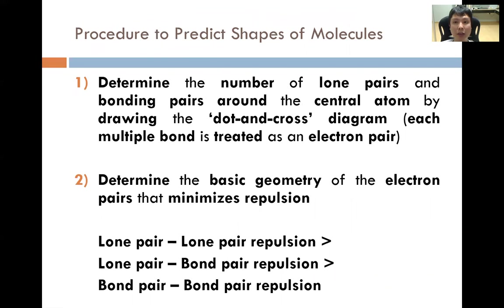The procedure to predict the shape of a molecule: first, determine the number of lone pairs and bond pairs around the central atom by drawing the dot-and-cross diagram — each multiple bond is treated as one electron pair, or electron domain. We count the number of electron domains around the central atom, where an electron domain is simply a region of electrons placed around the central atom.